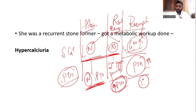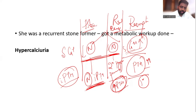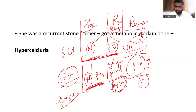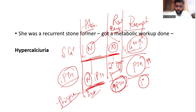Renal leak can occur due to Bartter syndrome or other defects in renal calcium handling. If the patient is losing calcium through the kidneys, you can give thiazide diuretics, which help in calcium reabsorption so the leakage decreases. You also advise the patient to reduce salt intake, as less salt means less calcium is lost.